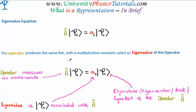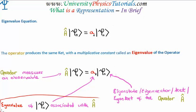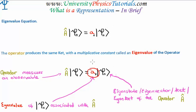So, the operator measures the value of an observable — a property of your quantum state. It gives us back the same quantum state, but with a multiplicative constant, which is the eigenvalue of the quantum state, and this is the value of the observable or the property you're looking to measure. Now, the eigenvalue is associated with the operator. For example, if the operator was our momentum operator, then this would be the momentum eigenvalue, or the value of momentum. If this was the position operator, well then our eigenvalue would be that of position, associated with the position operator.